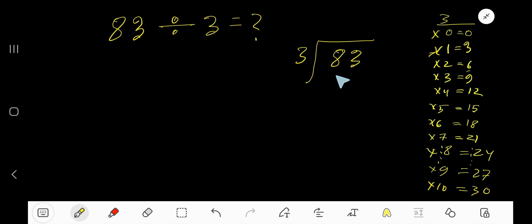3 goes into this 8 how many times? 3 times 3 is 9, which is greater, so 2 times. Write 2. 2 times 3 is 6. Subtract 2, bring down this 3. 3 goes into 23 how many times?